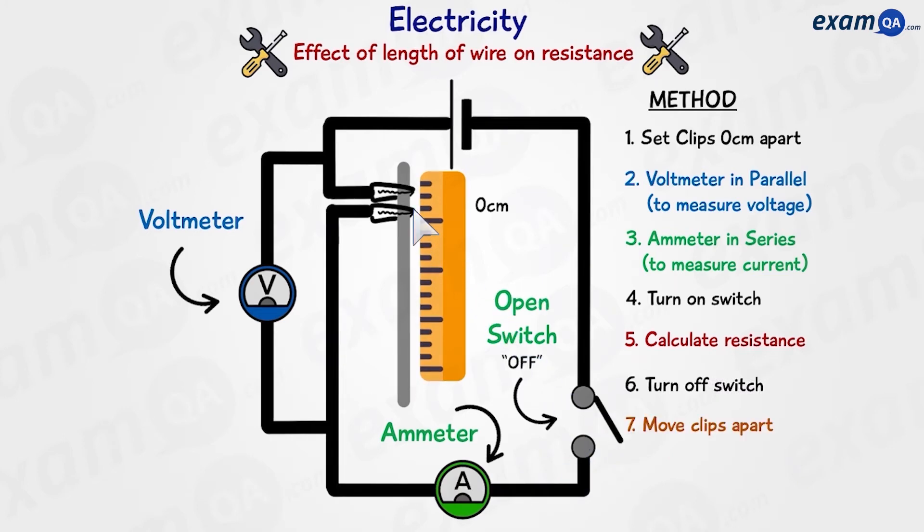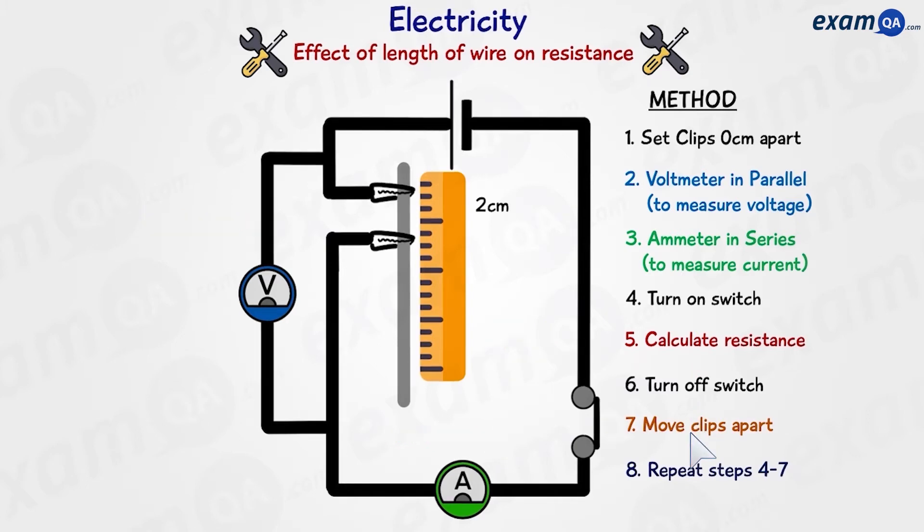So for example, we'll move them by two centimeters apart, and then we're going to repeat the whole process. So close the switch, calculate resistance by looking at the ammeter and voltmeter, then open the switch, move the clips apart, and repeat. We continue this process until we get all the way to the end.